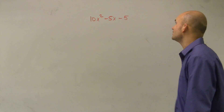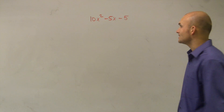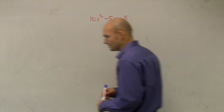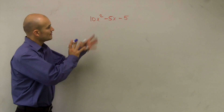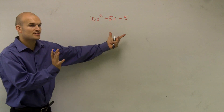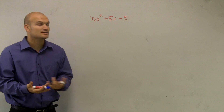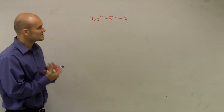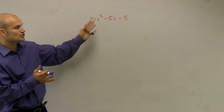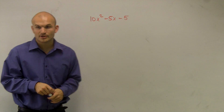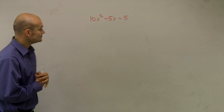We need to factor this expression. Factoring means we take an expression and rewrite it as a product of its factors. In this case, we're going to take our trinomial and write it as a product of two factors.